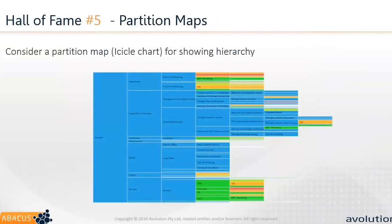Partition maps are another favourite — very similar to tree maps but showing the entire hierarchy all at once, best shown in an interactive view. You can drill down into various areas or see it all at once. They're also known as icicle charts when vertically oriented. They work very effectively to show cost, and they tend to resonate well with various stakeholders.